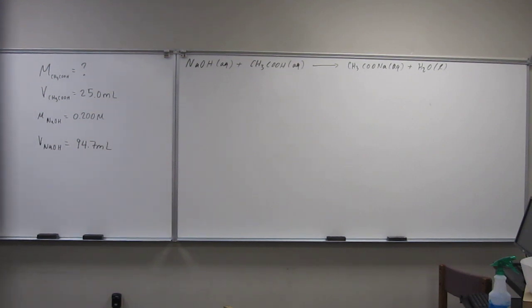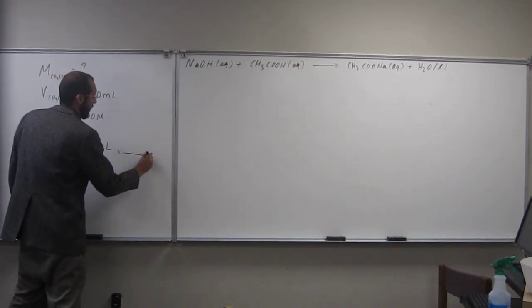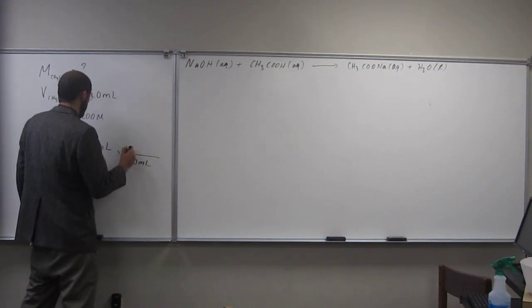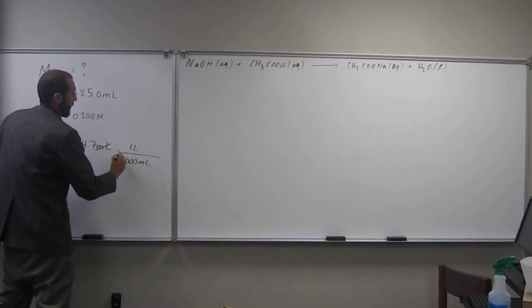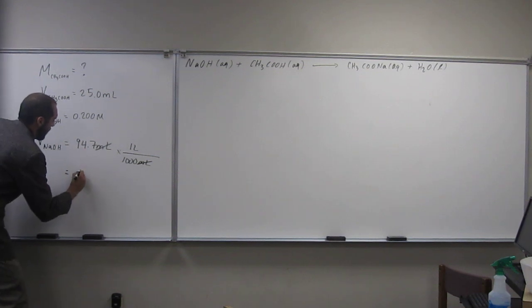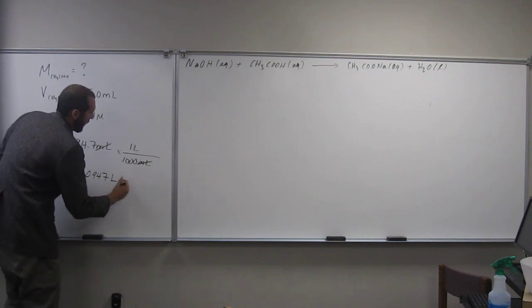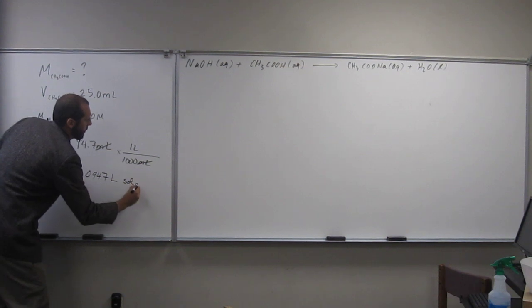But let's figure out how many moles of NaOH are in 94.7 milliliters. In particular, this 0.2 molar NaOH. So in order to do that, and this is going to be of the NaOH solution. So I'm just going to put solution.